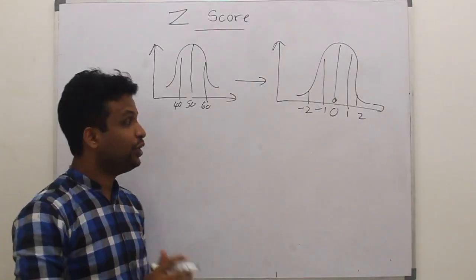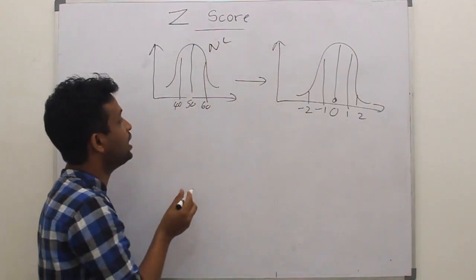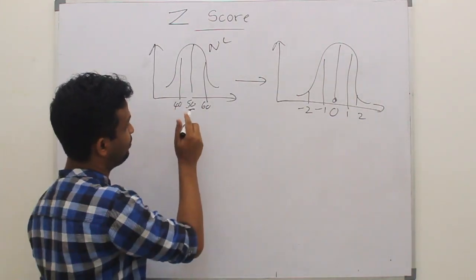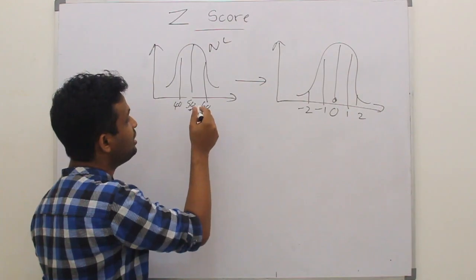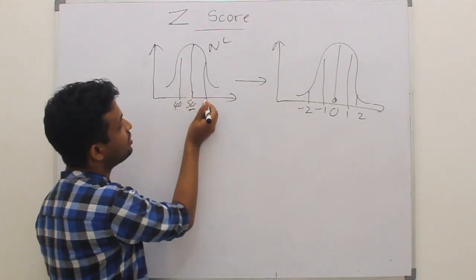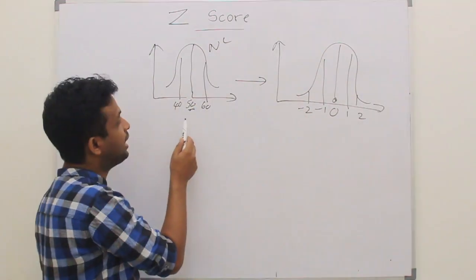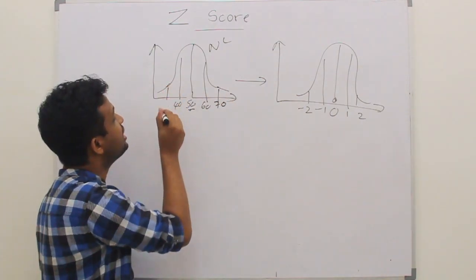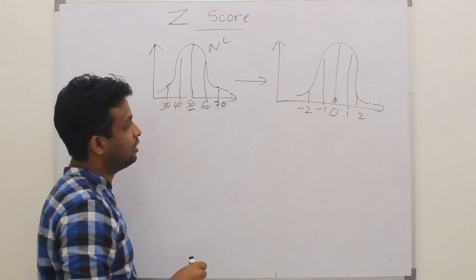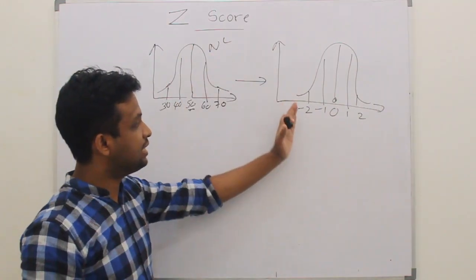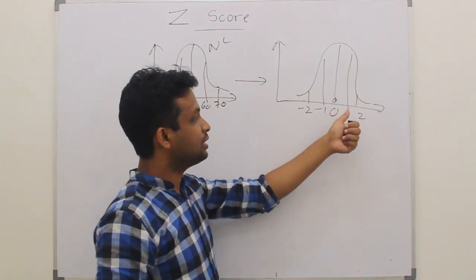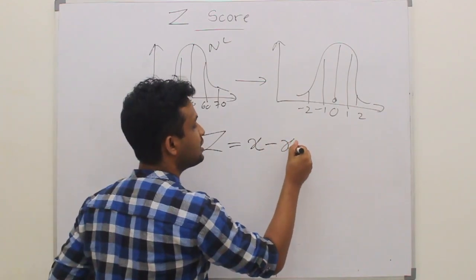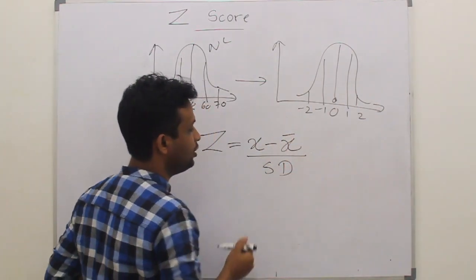Now we have a normal distribution where the mean is 50. Let's assume that this is the marks distribution of a class, and the standard deviation is 10. Because of that, at plus 1 standard deviation we have a value of 60, and at minus 1 SD we have a value of 40. At plus 2 SD we have 70, and at minus 2 SD we have 30. Once we standardize, the mean will become 0 and the standard deviation will become 1.